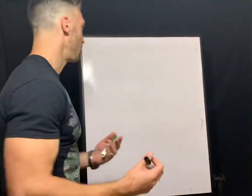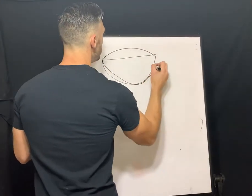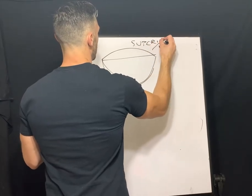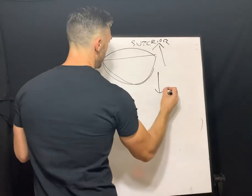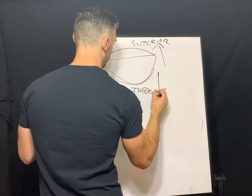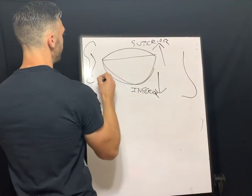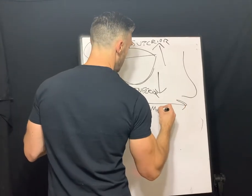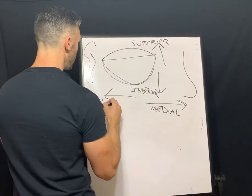Before we go over that, I just want to talk about some basic terms that you'll need to know. When referring to the eye, you'll use the terms superior, which is the top or up, inferior or below, using the nose for a reference point as well as the ear. Then you have medial, which is towards the midline, or lateral, which is away from the midline.